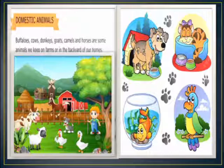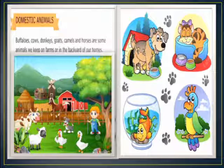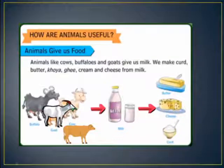In the previous class we learnt about domestic animals. We keep some animals at home — they are called pet animals. Some animals are kept outside at the farm — they are called farm animals. Farm animals and pet animals are both called domestic animals. Here you can see some pet animals and farm animals. Now today we are going to study how animals are useful to us.